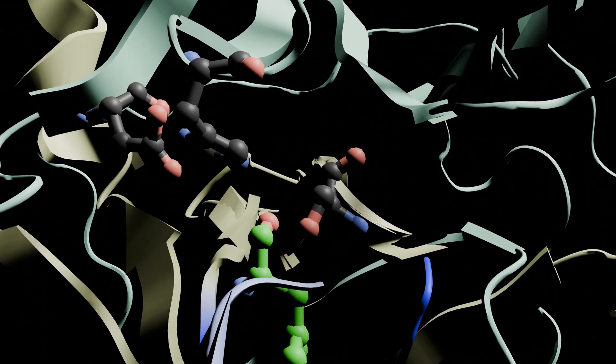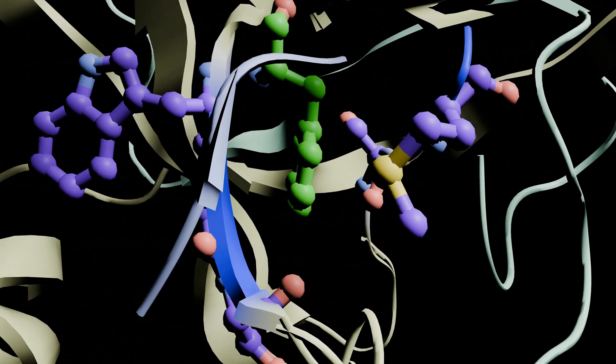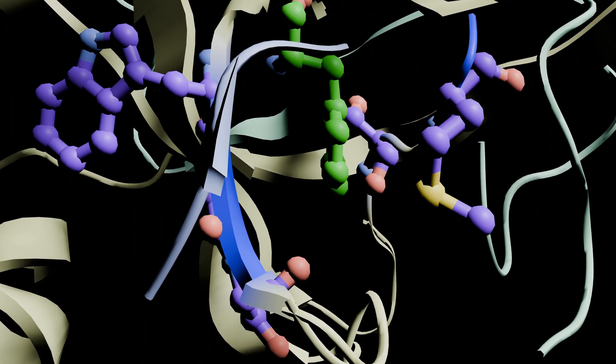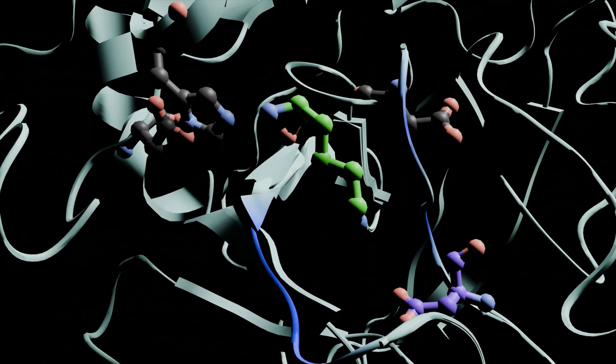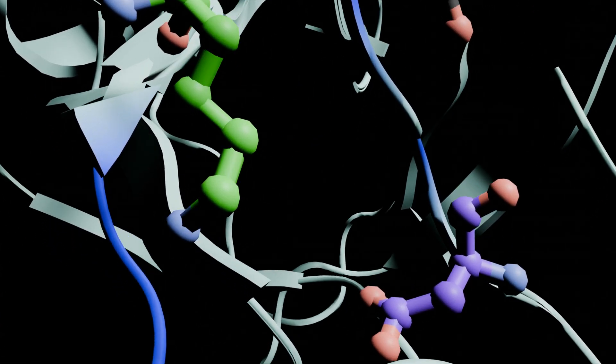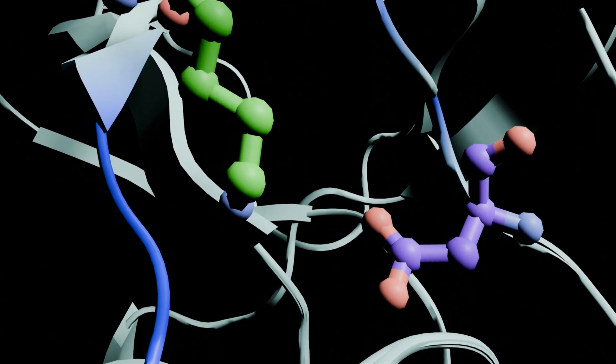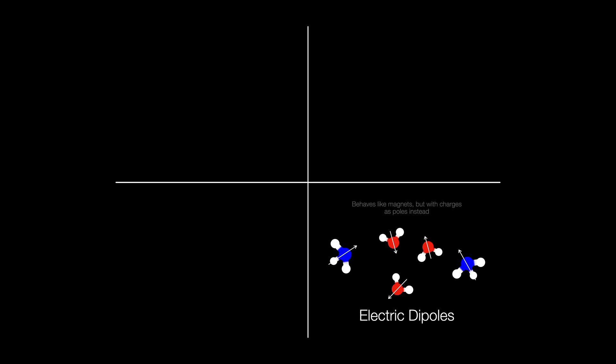There's a hole called the S1 pocket next to where the peptide binds and that hole is different for all three. In trypsin, there's a negative aspartate in the pocket, so it only targets positively charged amino acids. This is another common force, the electric charge.